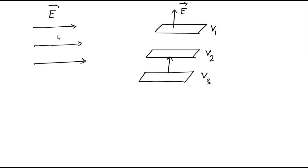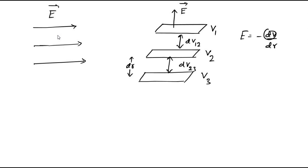The difference in potential between two equipotential surfaces is always fixed. In that case, E equals minus dV/dr, where dr indicates the gap between the equipotential surfaces. Since dV is fixed, the more the gap between equipotential surfaces, the less the electric field strength; and the less the gap, the greater the electric field strength.